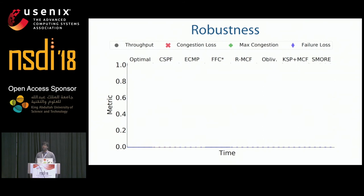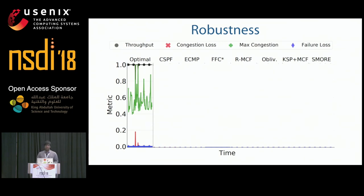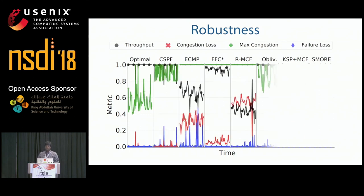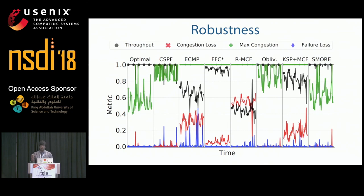We also performed a robustness experiment where, for each traffic matrix, one random link was failed and the TE system was allowed to react and change its routing scheme. As expected, optimal TE rerouted around most failures with low congestion, though congestion increased compared to the no-failure case. Maximum congestion for other TE schemes also increased, but SMORE remained competitive with optimal in terms of maximum congestion and again delivered approximately 100% throughput.